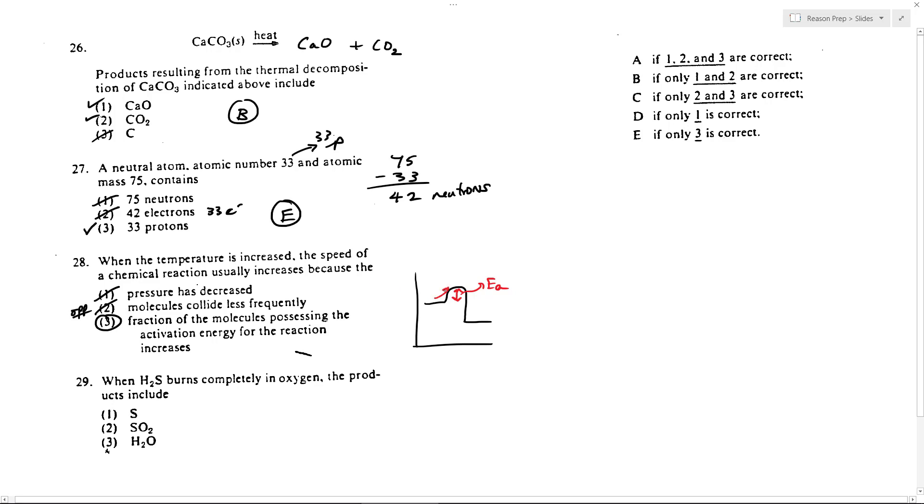And so when you increase the temperature, what you're doing is you're increasing the average kinetic energy of your molecules. And so you're going to have more molecules that are going to have the energy to get over that hump, which is why the rate of reaction will increase. And so that's why three is true, and therefore when we look at the choices, it's going to be choice E.